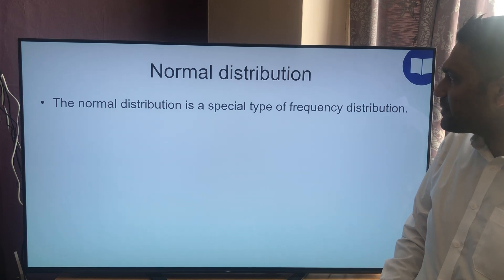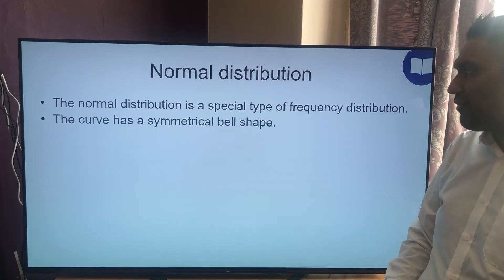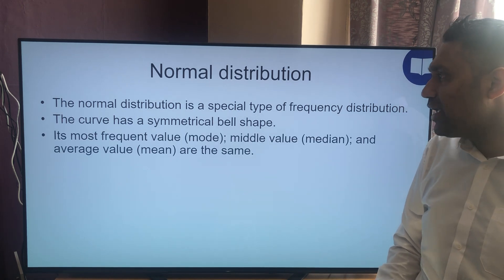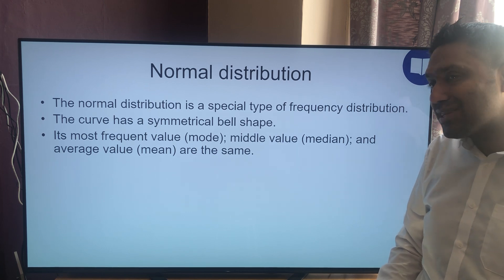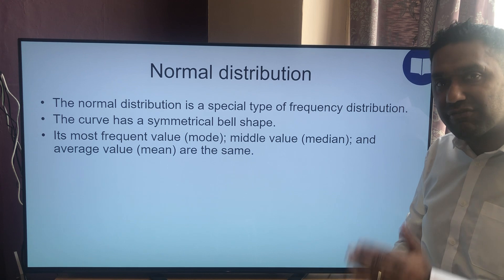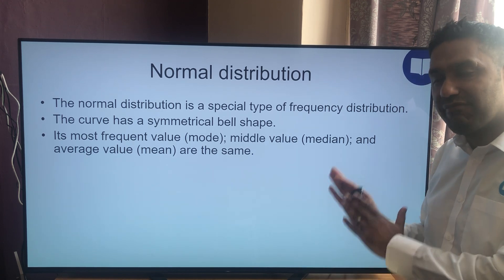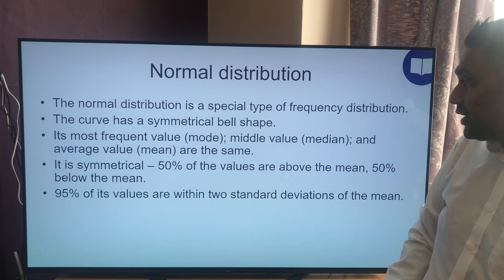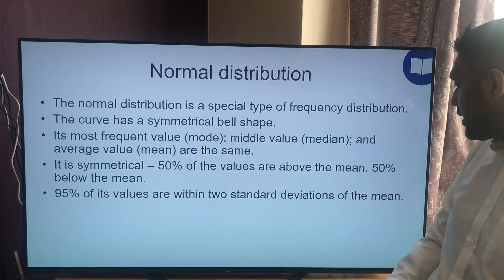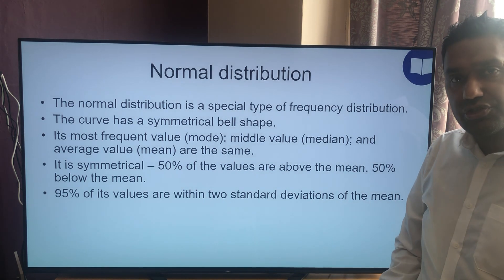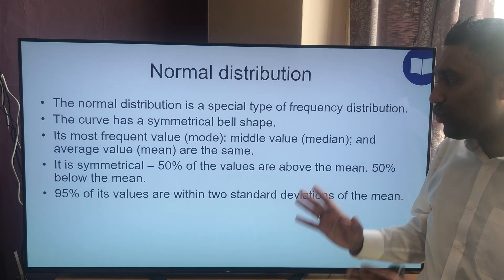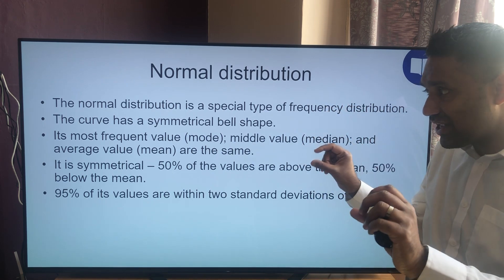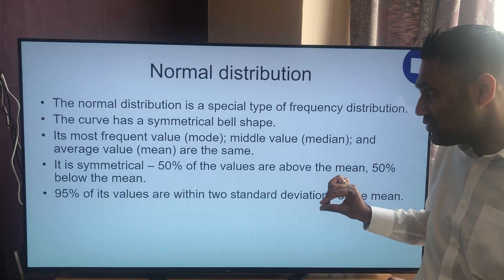Normal distribution is a special type of frequency distribution. It has a symmetrical bell shape — sometimes called a bell-shaped curve. The mode, median, and mean are all at the same point, right in the middle — 50% on each side. Everything within that central range represents about 95% of the population, with just 2.5% at each extreme tail. We'll look at standard deviations in a later lesson.